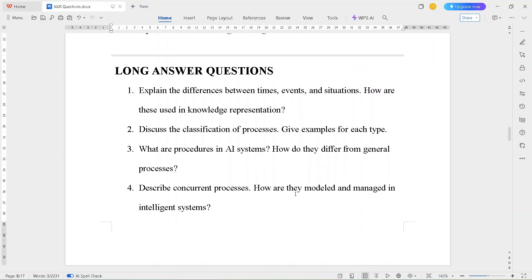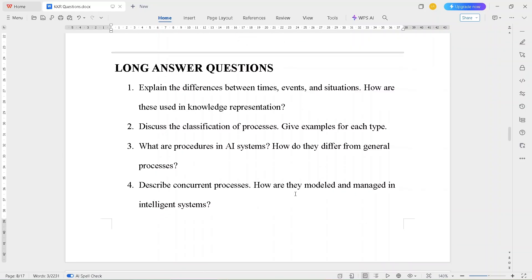The long answer questions are: Explain the differences between times, events and situations. How are these used in knowledge representation? Discuss the classification of process. Give examples for each type. What are procedures in AI systems? How do they differ from general process?